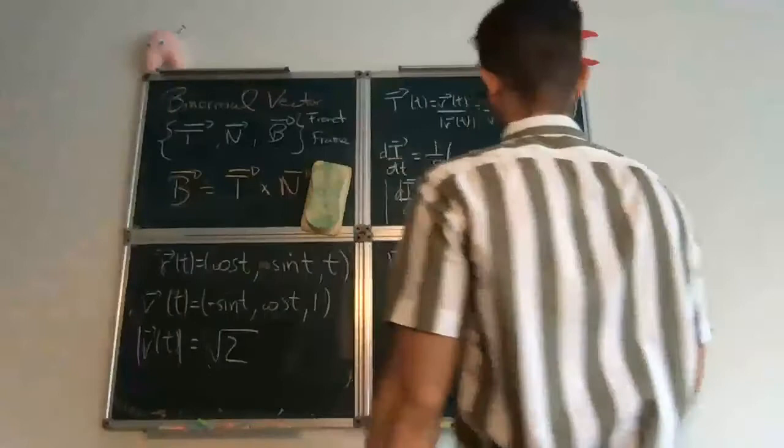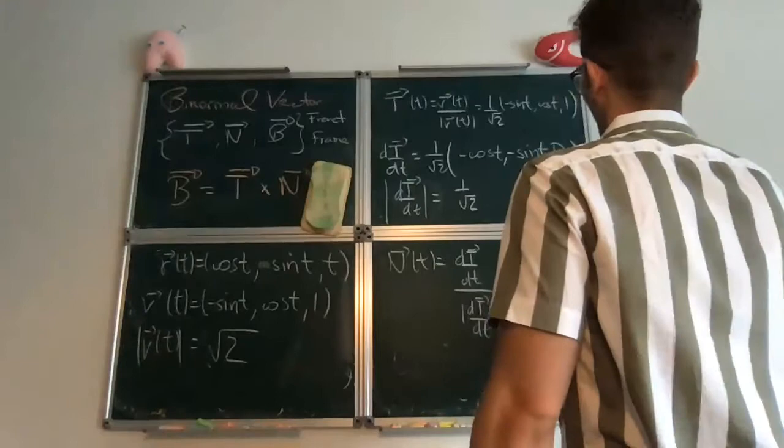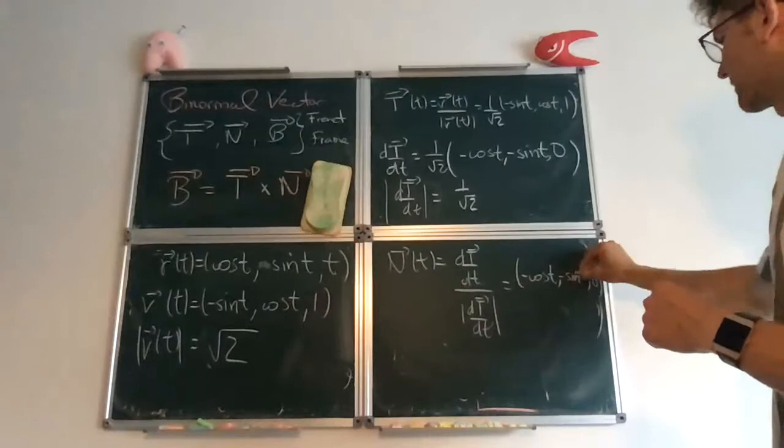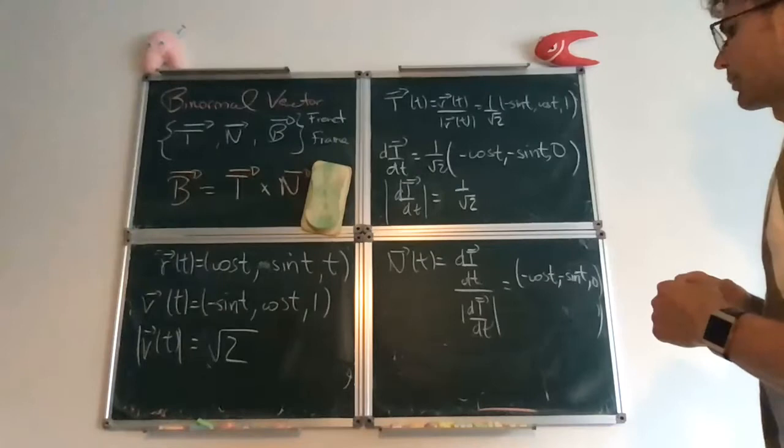Well, it was this divided by its norm. So that gives you negative cosine of t, negative sine of t, comma 0. And you can check, for example, that this is orthogonal to this. So they are truly perpendicular vectors.